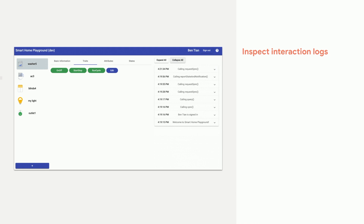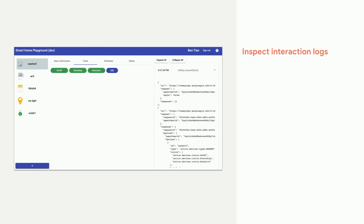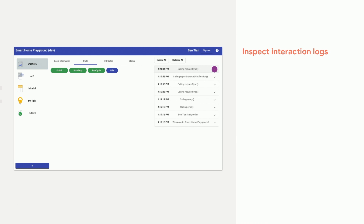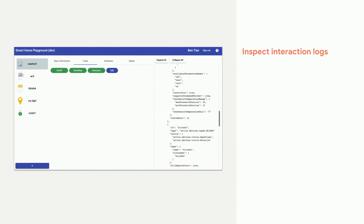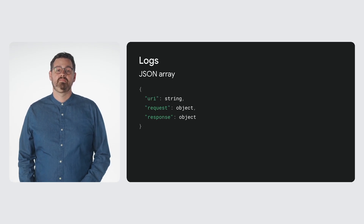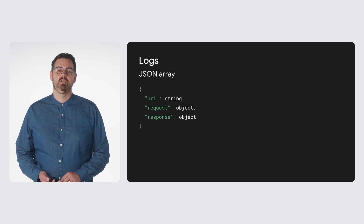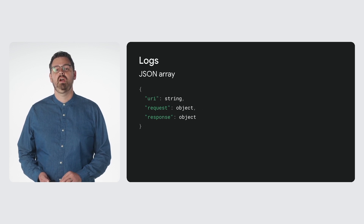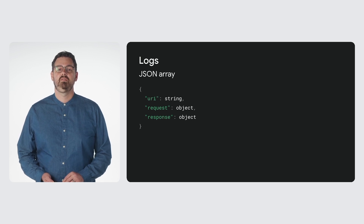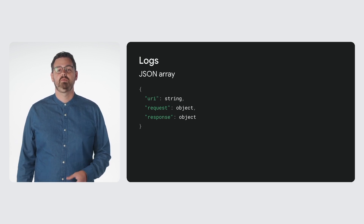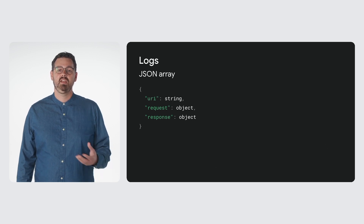When you play with virtual devices, the Google Home Playground automatically applies the change to HomeGraph. The interactions with HomeGraph are recorded in the logs panel, where you can expand each entry and inspect the HomeGraph API request and response payloads. The logs are represented as a JSON array. For each object in that array, you have three components: a URI, which is the URL of the HomeGraph API call; a request, which is the request body of the HomeGraph API call — see the documentation for the format of each method; and a response, which is the response body of the HomeGraph API call. Take a look at the documentation to understand the format of each method.